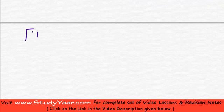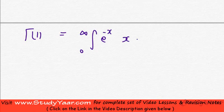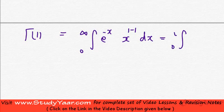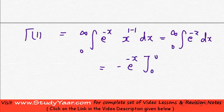Let's find out what gamma of 1 is. This is going to be the integral from 0 to infinity of e raised to power minus x, x raised to power 1 minus 1, dx. Since x raised to power 0 is 1, this simplifies to the integral from 0 to infinity of e raised to power minus x, dx, which equals minus e raised to power minus x evaluated from 0 to infinity.